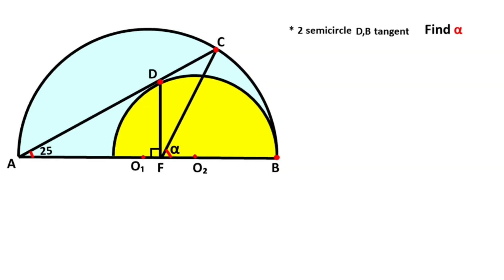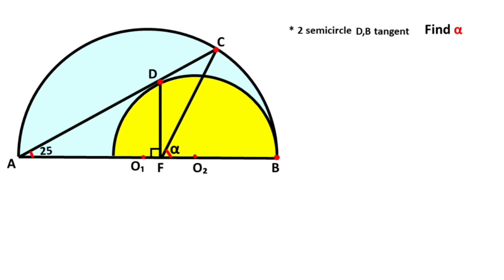Hello everyone. In this video we have a circle with center point O2, point D, and point P given as a tangent point. Here 90 degrees is given, here is 25 degrees, and angle CFB — so alpha — is asked.